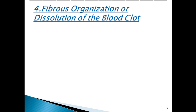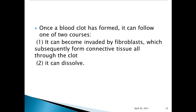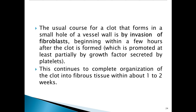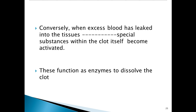The fourth event is fibrous organization or dissolution of the blood clot. Once a blood clot has formed, it can follow one of two courses: it can become invaded by fibroblasts, which subsequently form connective tissue throughout the clot, or it can dissolve. The usual course for a clot in a small vessel hole is invasion by fibroblasts beginning within a few hours, promoted by growth factors secreted by platelets, completing organization into fibrous tissue within one to two weeks. When excess blood has leaked into tissues, substances within the clot become activated as enzymes to dissolve the clot.